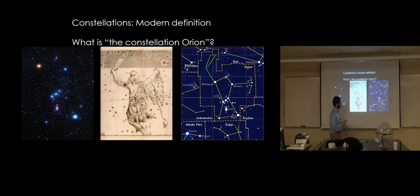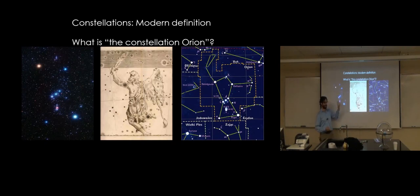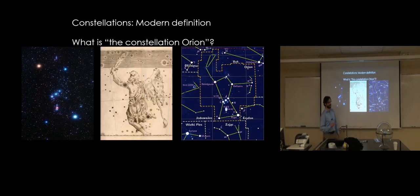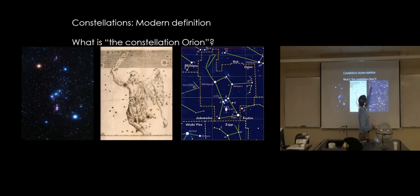You know, somebody might think the set of stars is the constellation, somebody might think the picture, somebody might think the stick figure. But go to an astronomy department and you say something happened in the constellation Orion — they're going to have a precise meaning for that, and it's kind of none of the above. The most helpful thing would be to have a definition of a region of the sky that functions like, if you say 'I was in Texas over spring break,' people know where you are — it's a geographic boundary that lets you know precisely that you are within some region.